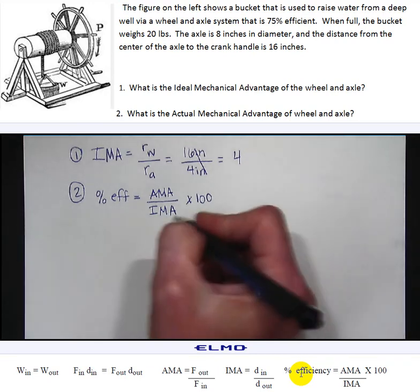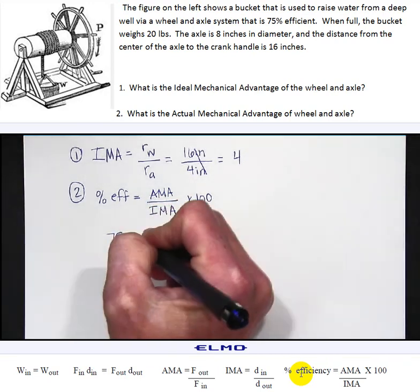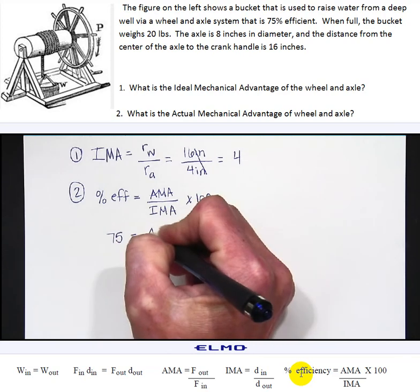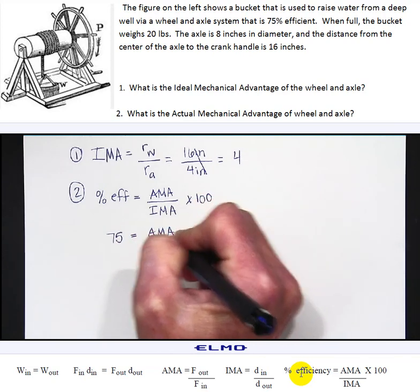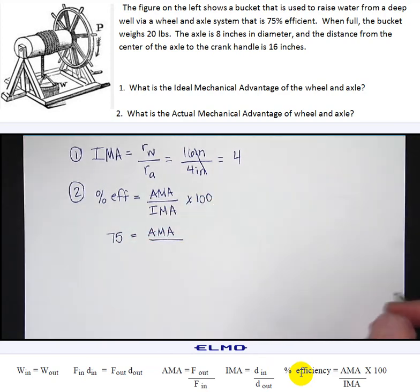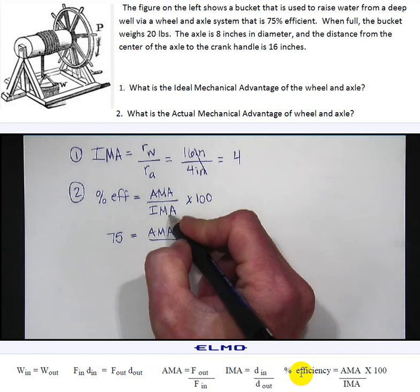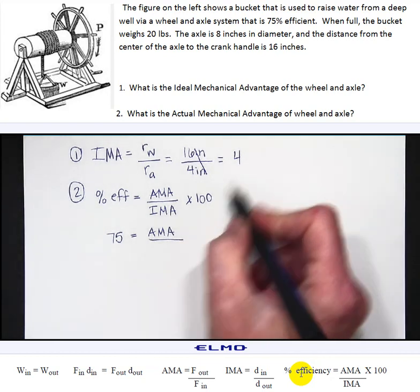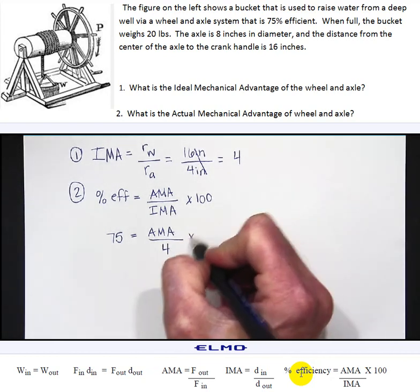My percent efficiency is 75%, I'm looking for actual mechanical advantage so I'm going to leave that alone. The ideal mechanical advantage I just found to be 4 so I'm going to plug that in and then times 100.